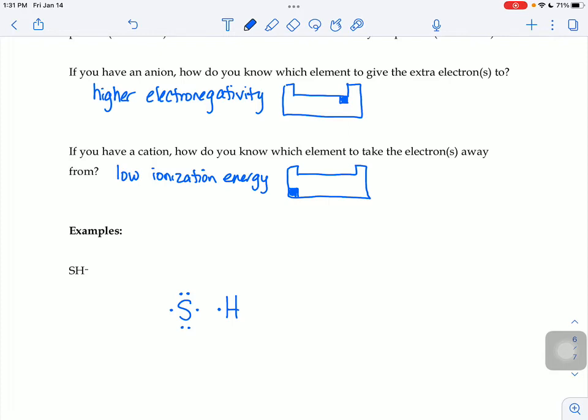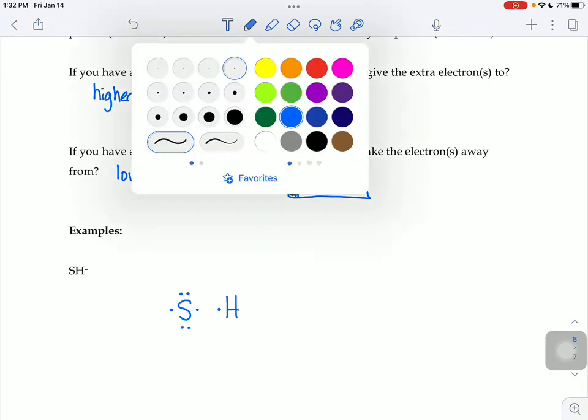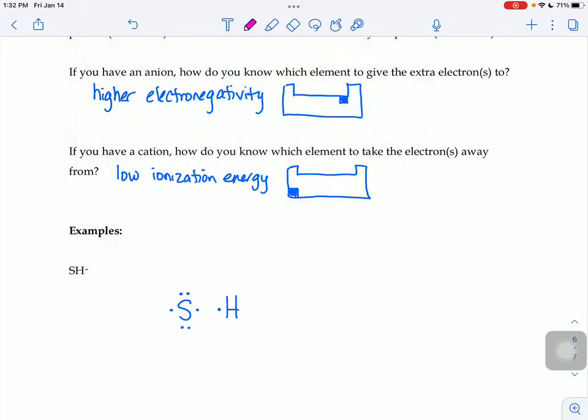The SH minus means that we've got an extra electron somewhere in our picture. So we have to decide, do we give the extra electron to the H or to the S? Because S has a higher electronegativity, can attract electrons better than hydrogen can, I'm going to give that extra electron to my sulfur. I put the extra electron in a different color, just so you can see that our S that would normally have 6, now has 7.